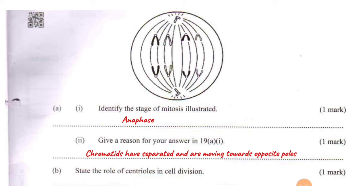Part B: state the role of centrioles in cell division. Centrioles give rise to spindle fibers — spindle fibers are the ones to which the chromatids are attached.